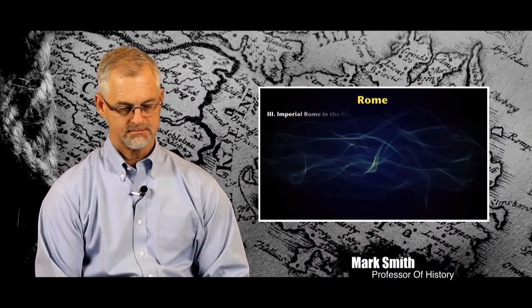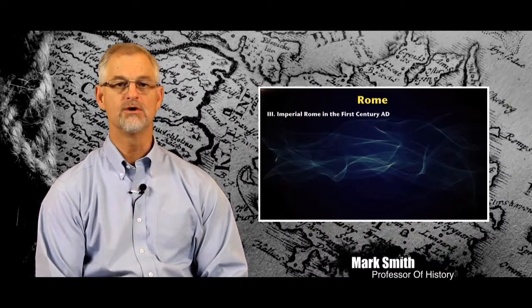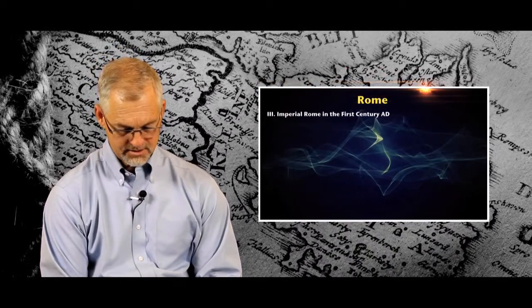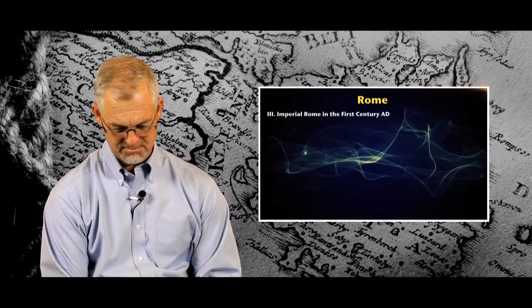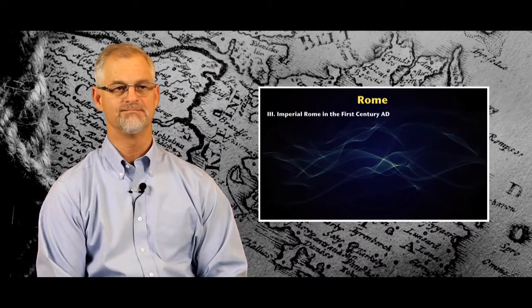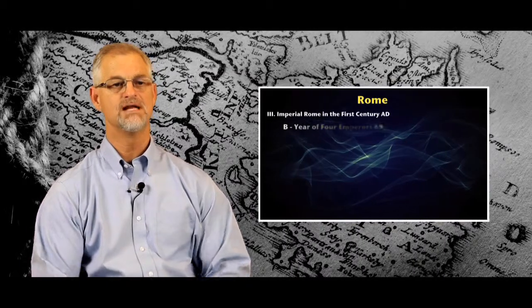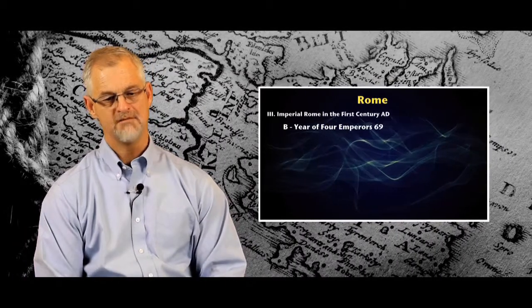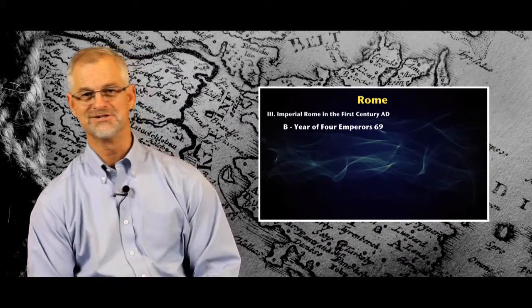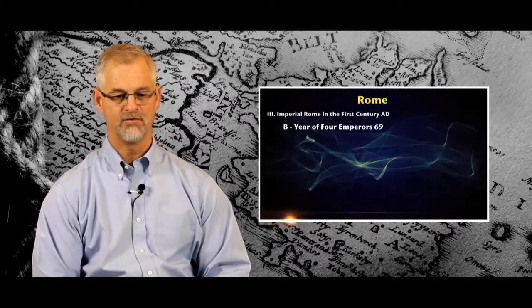After the Julio-Claudian dynasty in the first two-thirds of the first century, Nero committed suicide in 68. After Nero's suicide began a bizarre year in which there were many conflicts in the empire, and four people claimed to be emperor during that year. We therefore call the year 69 the year of four emperors.